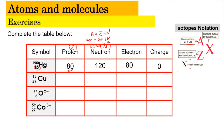For copper (Cu), the proton number is 29. Neutrons: 63 − 29 = 34. Since it is neutral, the electrons are also 29, and the charge is 0.